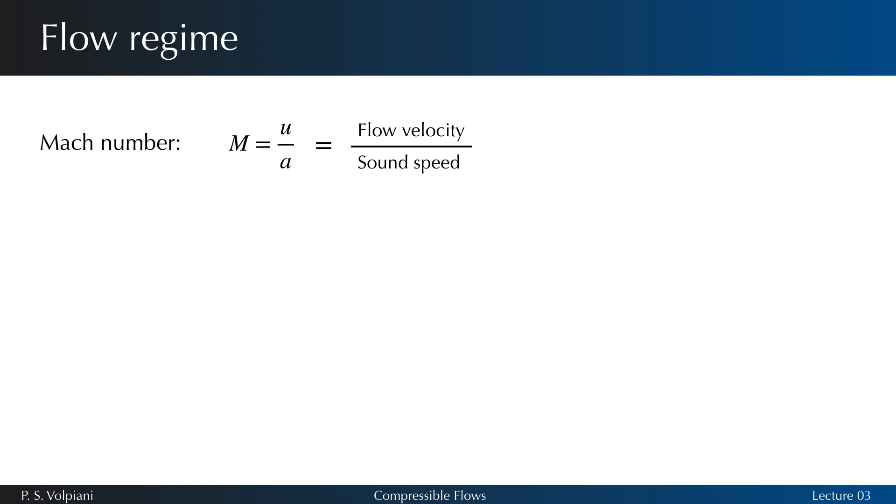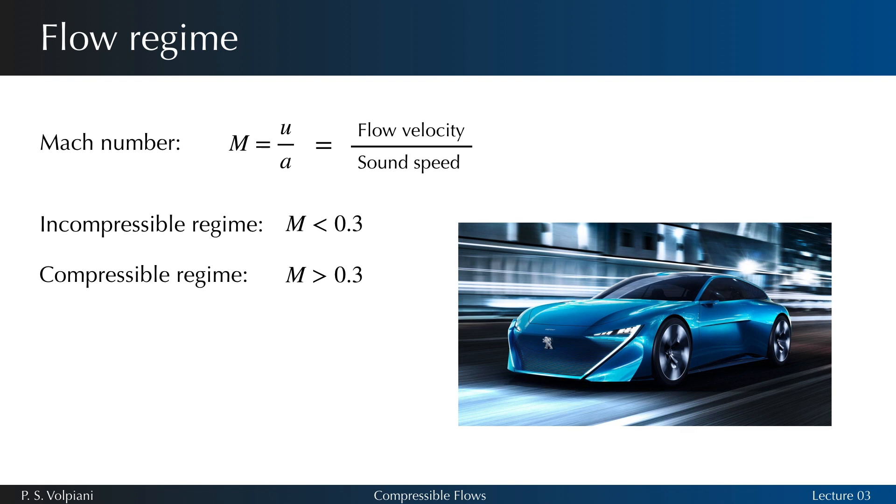As a rough guide, compressible effects can be ignored at Mach numbers below approximately 0.3. In this situation, the flow can be modeled as incompressible and the changes in pressure, temperature, and density are negligible. In this case, to solve the flow field, only the conservation equations of mass and momentum are needed, provided the corresponding boundary and initial conditions are given.